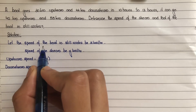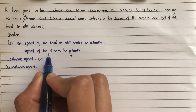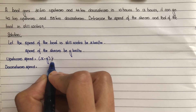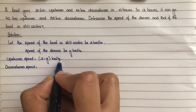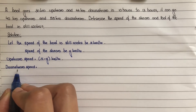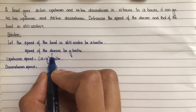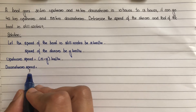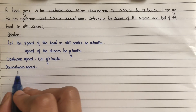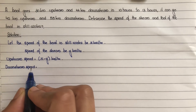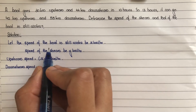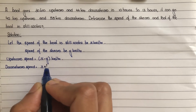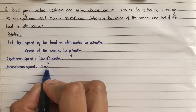The boat moves opposite to the stream's flow in the upstream case, giving upstream speed as x minus y km per hour. For downstream, the stream flows in the same direction as the boat, so downstream speed is speed of boat in still water plus speed of stream, that is x plus y km per hour.